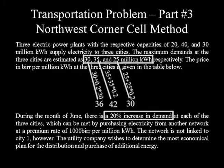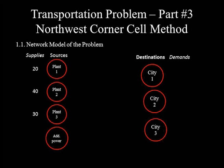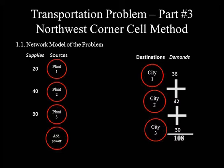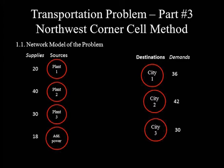The calculated demands are depicted to the right of the respective nodes: city one is 36 million kWh, city two is 42 million kWh, and city three is 30 million kWh. Total demand equals 36 plus 42 plus 30, which is 108 million kWh. Total supply from the three plants is 20 plus 40 plus 30, which is 90 million kWh. Total demand exceeds total supply by 18 million kWh, which must be purchased from the other network.